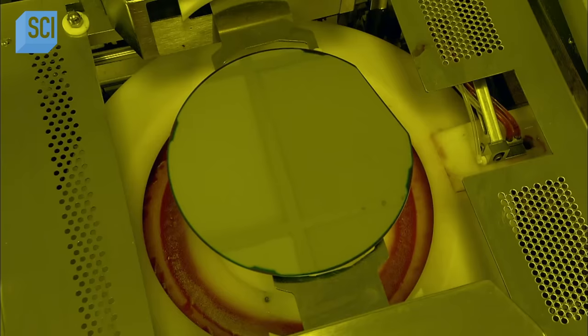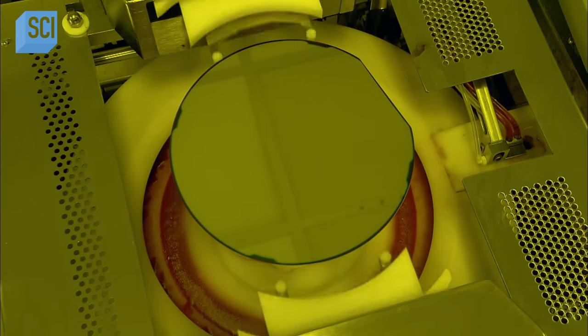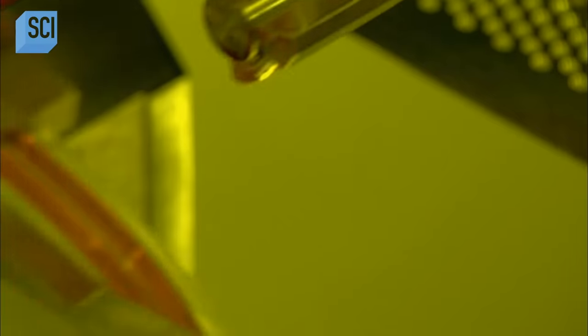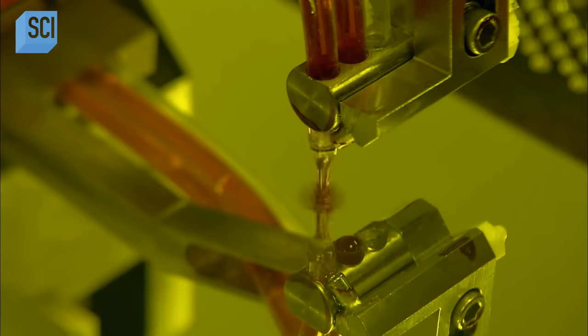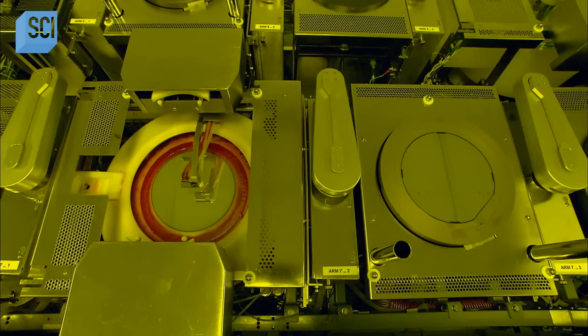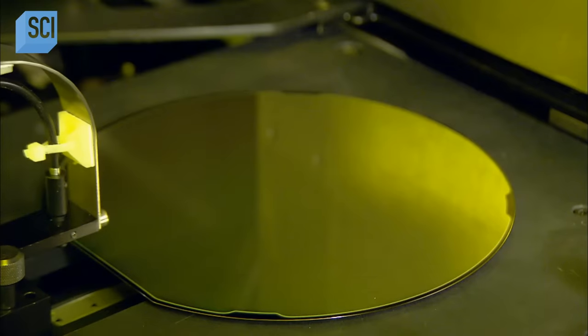The next machine deposits a light-sensitive chemical onto the wafer. The wafer spins, allowing the chemical to flow evenly across the surface. This all happens under the glow of yellow light to prevent the untimely activation of the chemical, which reacts to bright light just like an unexposed photographic negative would.